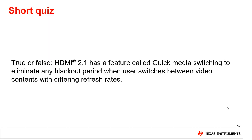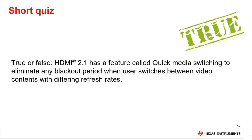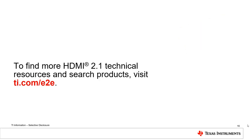True or false: HDMI 2.1 has a feature called Quick Media Switching to eliminate any blackout period when a user switches between video contents with differing refresh rates. True. The Quick Media Switching feature of HDMI 2.1 eliminates any blackout period when a user switches between video contents with differing refresh rates. Be sure to visit our E2E support forums at ti.com/E2E where we can help answer questions about designing with HDMI 2.1 interface technologies.